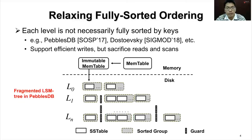This is why the optimization of relaxing fully sorted ordering was proposed. We give the example of the fragment LSM tree in PebblesDB for its first introduction of this idea. As shown in the figure, each level is not necessarily fully sorted by keys, so we don't need to rewrite a large amount of data during compaction. Such a design supports efficient writes but sacrifices reads and scans.